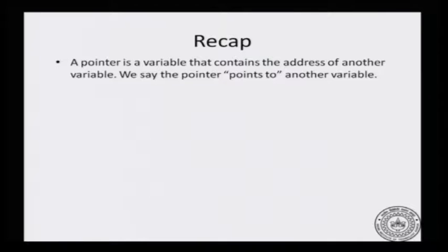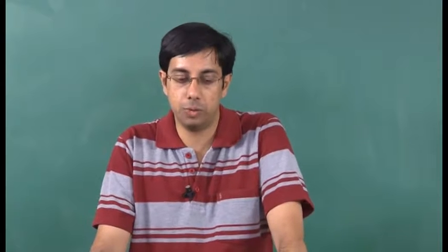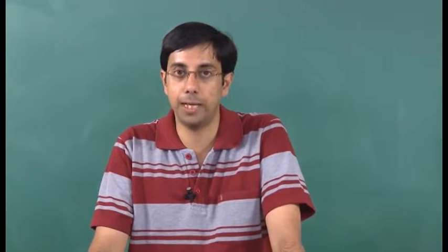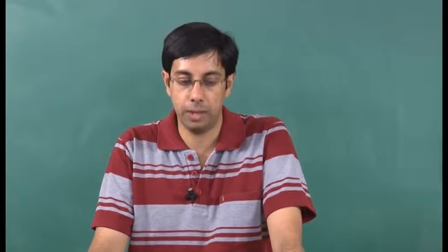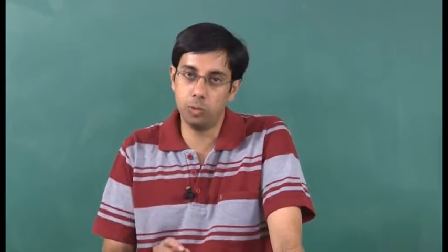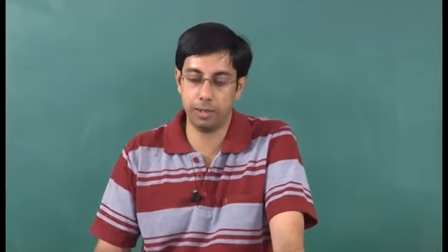This is the first thing — what is a pointer — and then we have seen what all you can do with a pointer, what are the operations that you can do on a pointer. If you have a normal variable you can take the address of that variable using the '&' operator. If you have a pointer then you can dereference the pointer by using star of PTR, that will go to the location pointed to by PTR and take the value of that target.